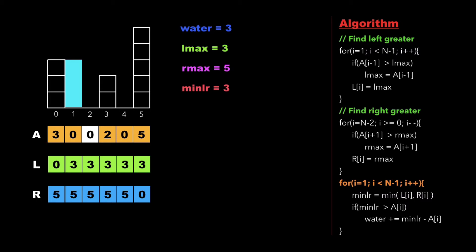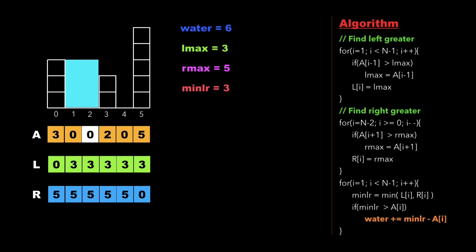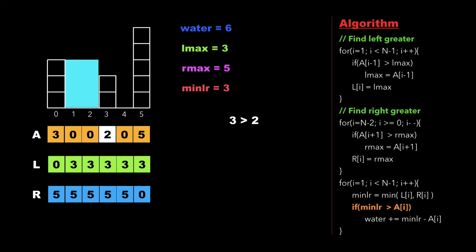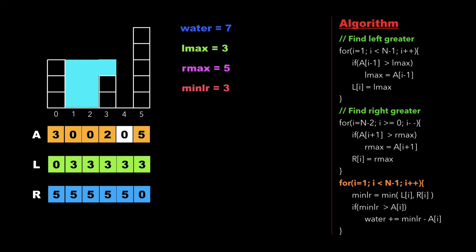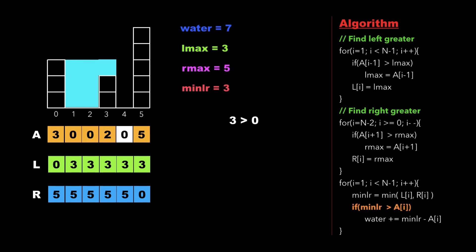Similarly for i = 2, we calculate min_lr as 3 and check whether it is greater than a[2]. Since 3 is greater than 0, we update water as 3 + 3 - 0 = 6. For i = 3, we calculate min_lr, check if 3 is greater than a[3] = 2, and update water to 7. For i = 4, we again calculate min_lr and update water as 7 + 3 - 0 = 10. As shown in the figure, we have collected a total of 10 units of water, and we can print this water value.